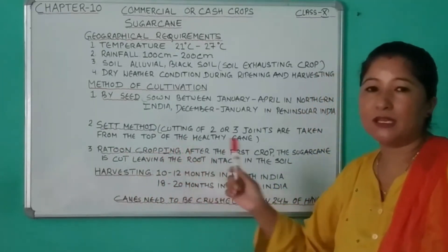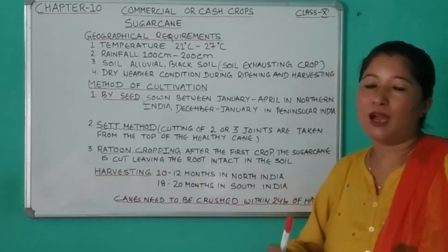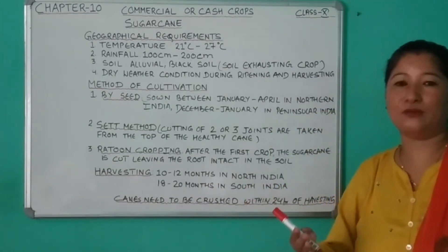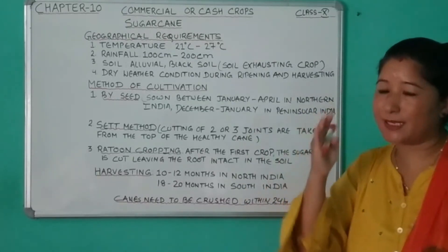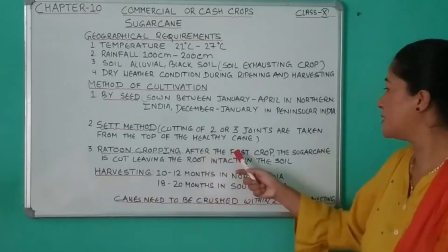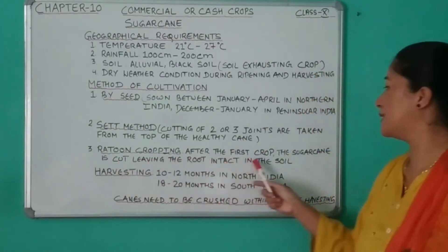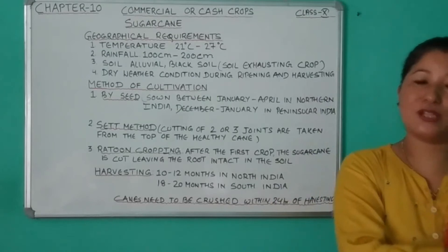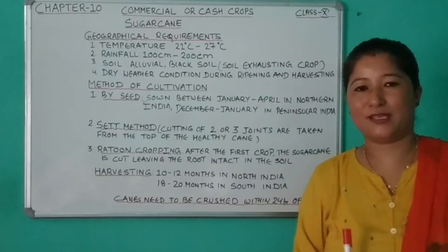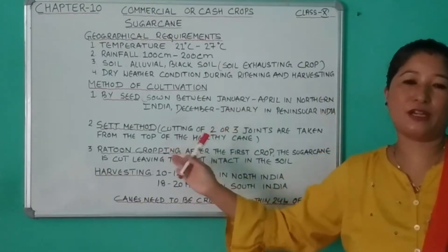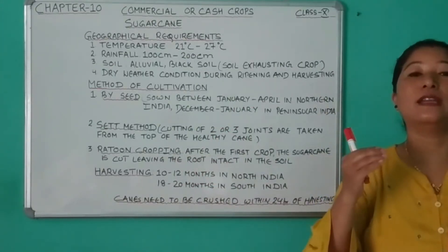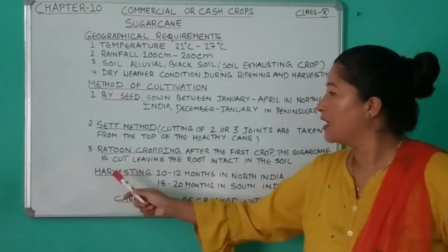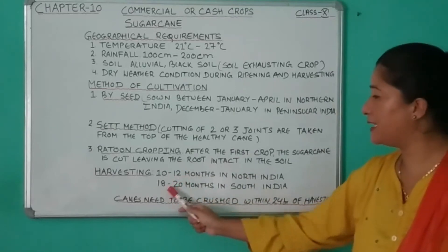In ratoon cropping, the cane is cut close to the ground leaving a little stalk and the root in the soil, and from the same root a second crop comes out — this is called the ratoon crop. The disadvantage is that after each successive ratoon cropping the sucrose content in the cane decreases. The advantage is that the ratoon crop matures early, is cheaper, and saves time and labor.